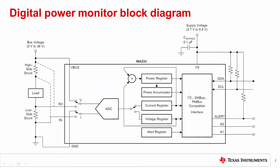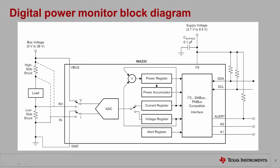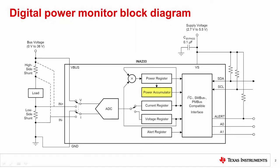Digital power monitors are current sensing devices that measure both shunt voltage and bus voltage. A programmable calibration register combined with an internal multiplier also enables direct readouts of load current and power consumption. The block diagram here shows the INA-233 as an example. This device also comes with a power accumulator for energy and average power monitoring.